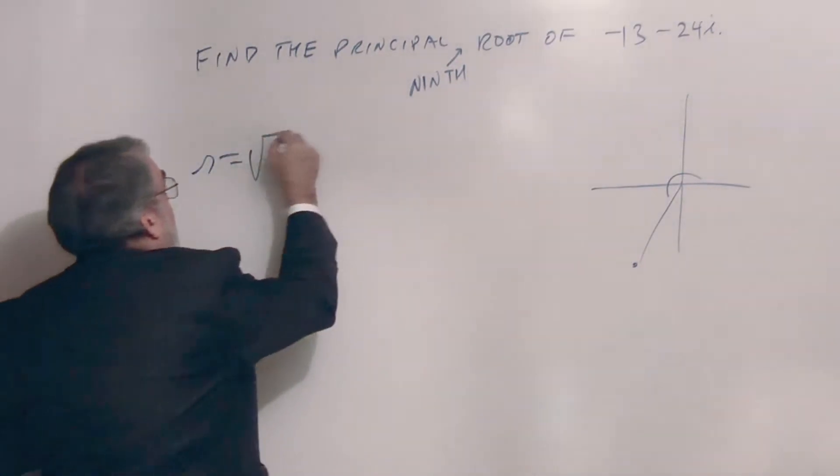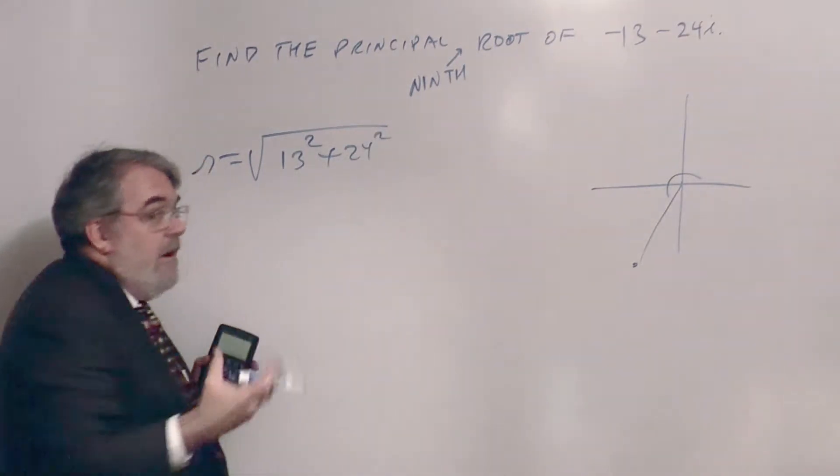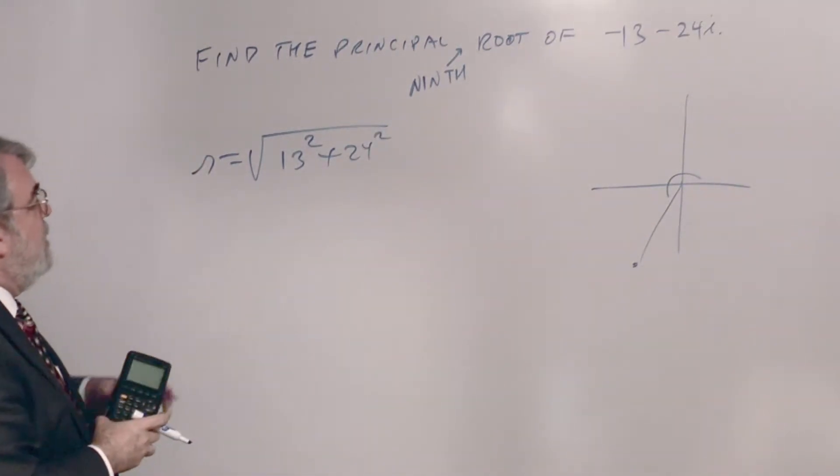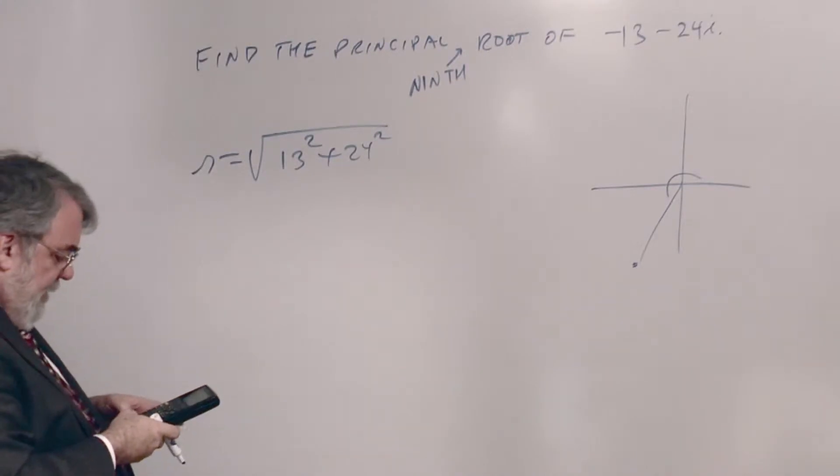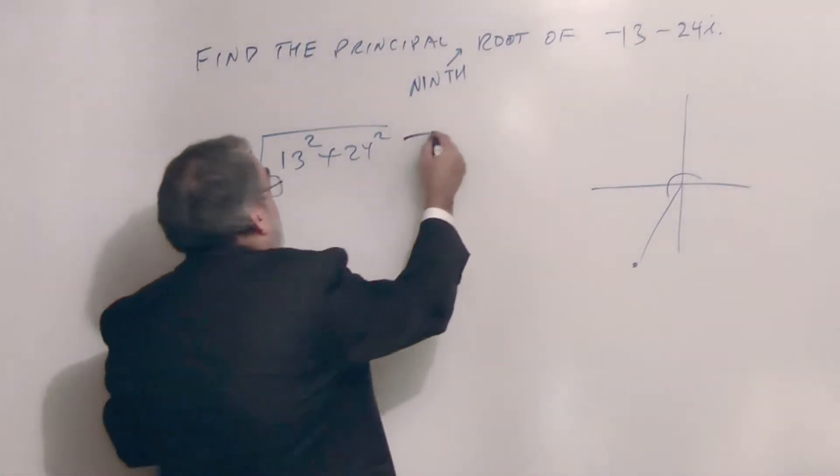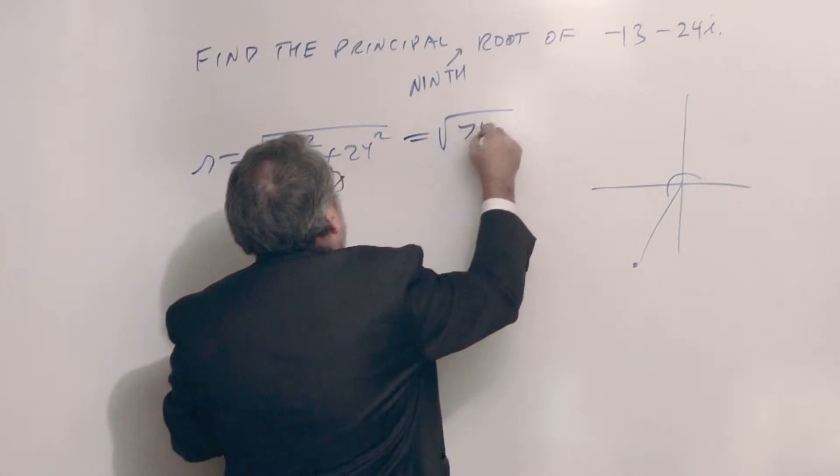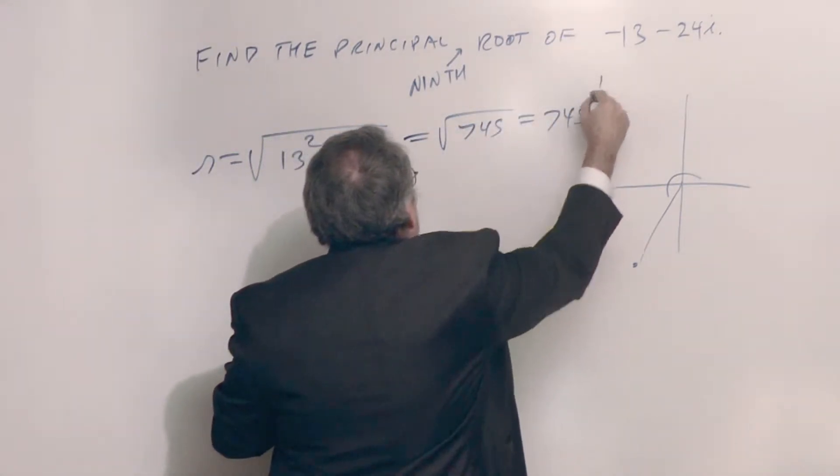So r is the square root of 13 squared plus 24 squared. The negatives will square out - you'll always get positives on here because you're squaring. So I don't know what that is. 13 squared plus 24 squared is 745.